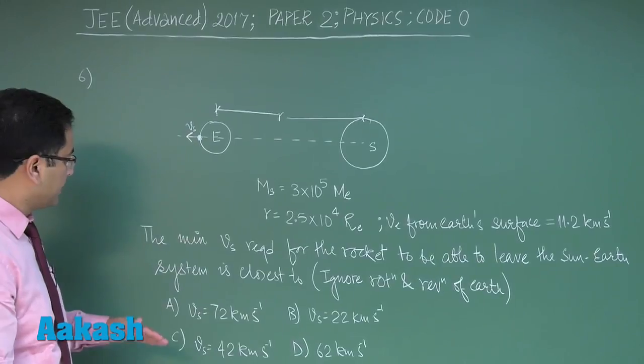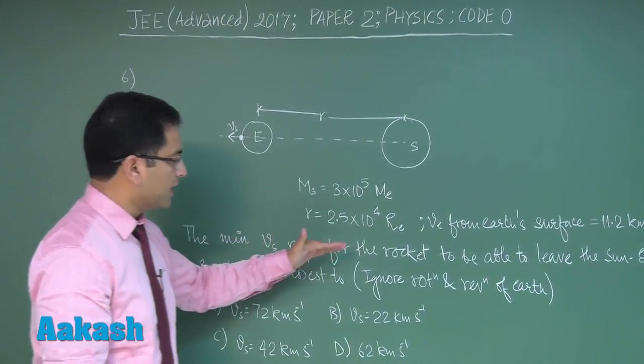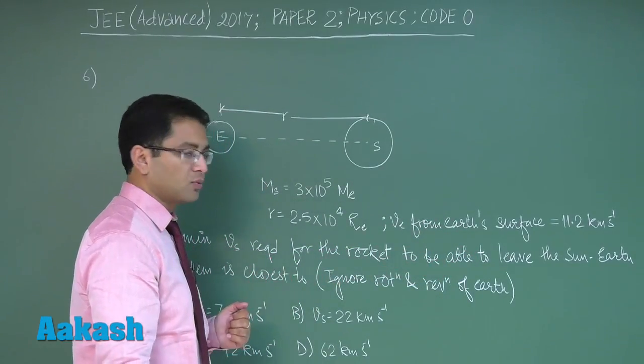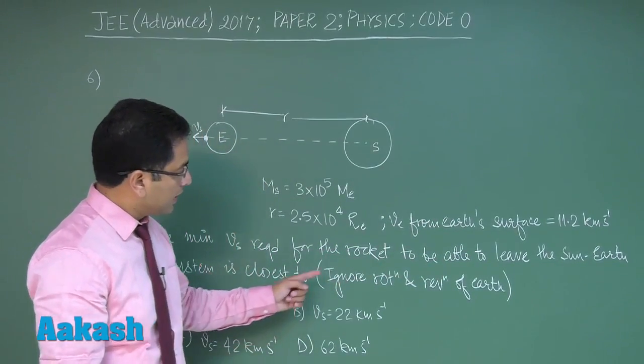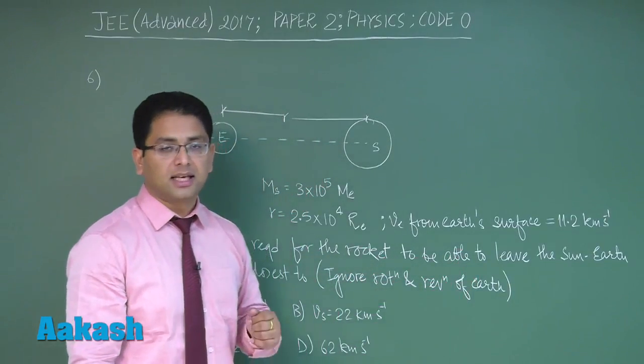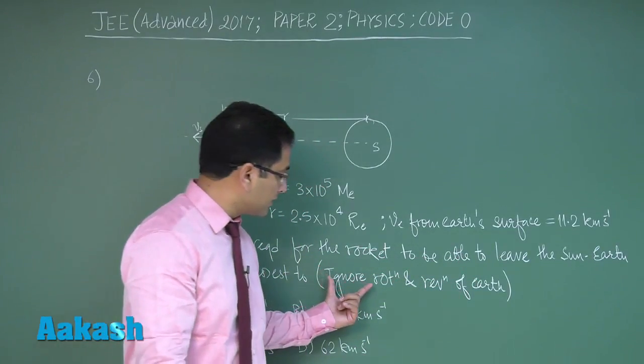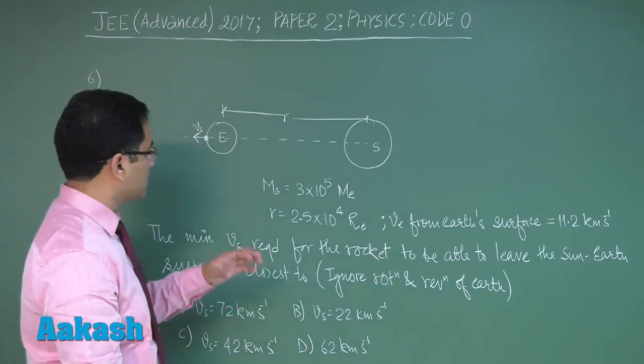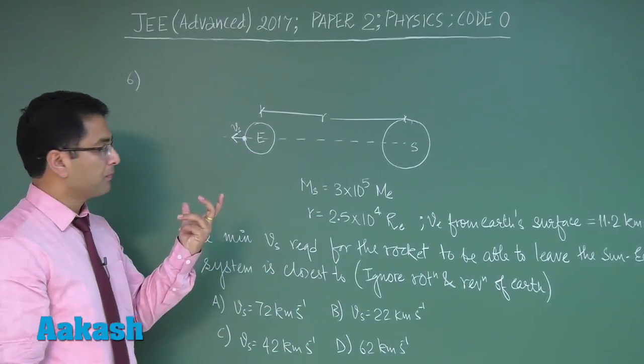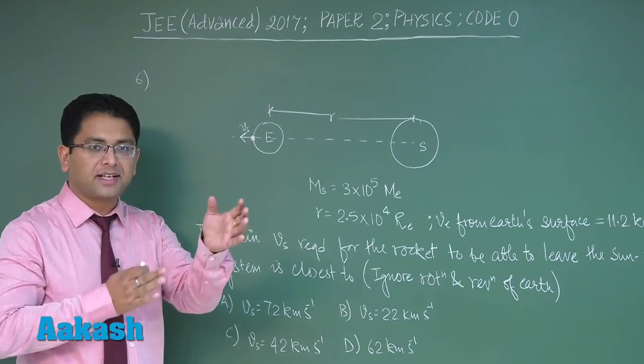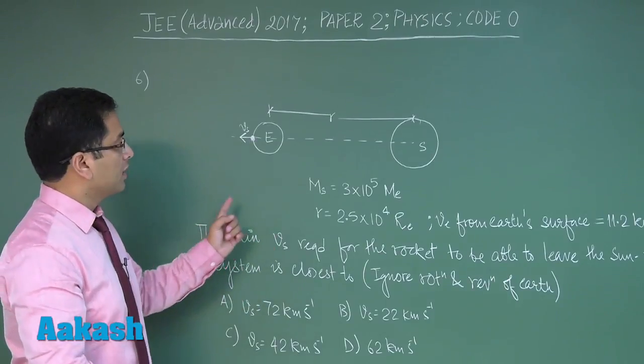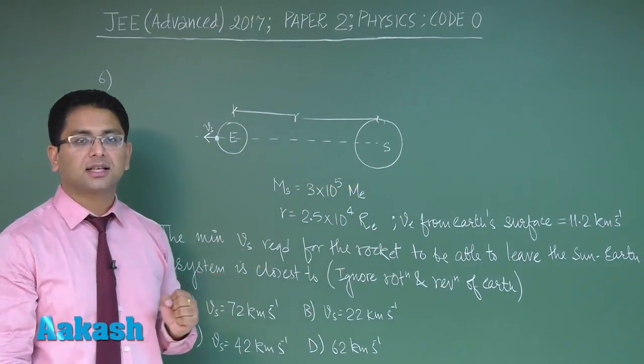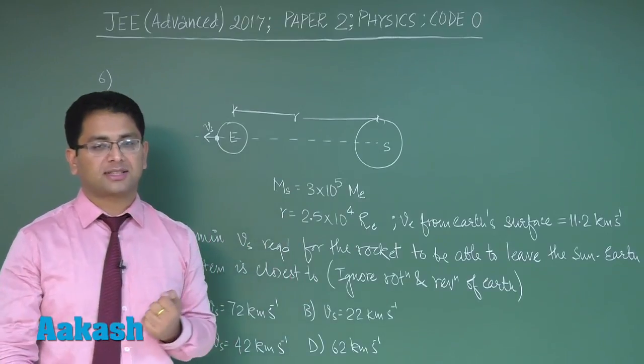Now what is the question? The minimum velocity required for the rocket to be able to leave the sun-earth system is closest to. Here, ignore rotation and revolution of earth is given. If this terminology wasn't there, the calculation would have been painfully difficult, because then the effect of rotation, the velocity of rotation and direction of launch, revolution effects, escape velocity from the sun system - everything had to be considered, which is called third cosmic velocity.